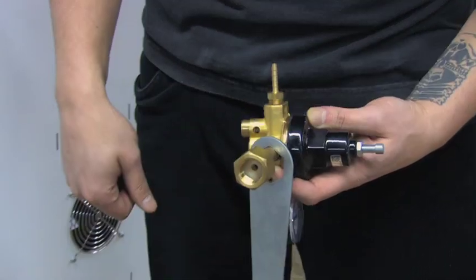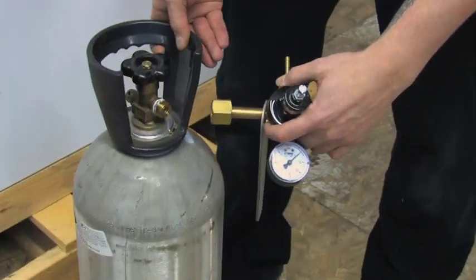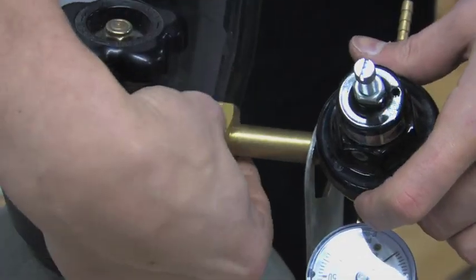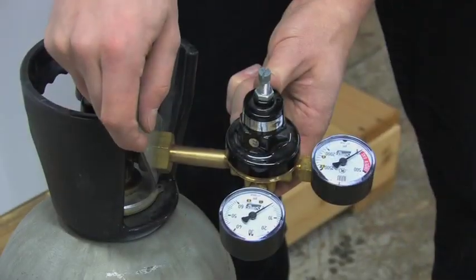Next, attach your CO2 regulator to your CO2 tank, tighten with your hand, then use the wrench provided to snug it right into place.